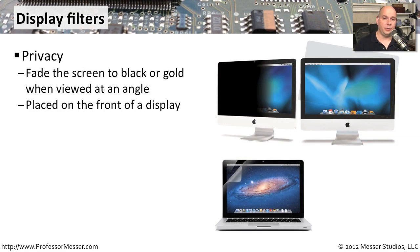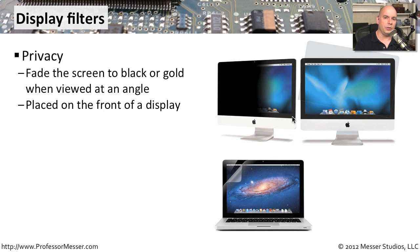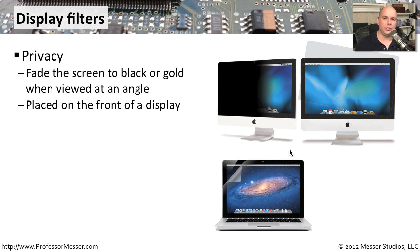Many people will also add filters to their displays. One very common filter, especially in environments where security is important, is a privacy filter. These are filters you put on the outside of your display — whether a desktop or laptop — and the screen is very clear when you're looking straight on, but as soon as you view it at an angle, the screen turns black or gold. This works in situations like an airplane, where the person next to you can't see anything on your screen at all.